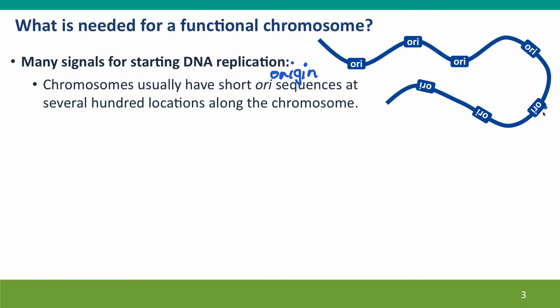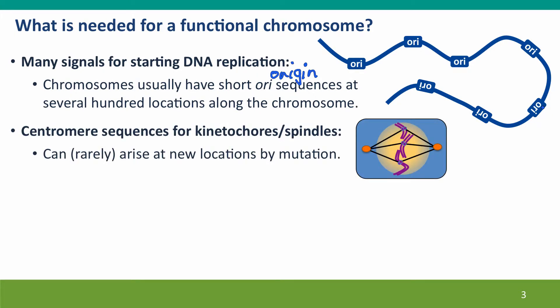Usually the presence of ORI sequences isn't a big problem for chromosome rearrangements because there are so many of them on each chromosome. Centromere sequences are the opposite — every chromosome only has one, and it must have one. Centromere sequences are the places where the kinetochores form in mitosis and meiosis, and these kinetochores are the structures that the spindle fibers attach to to pull the chromosomes to the poles of the cell.